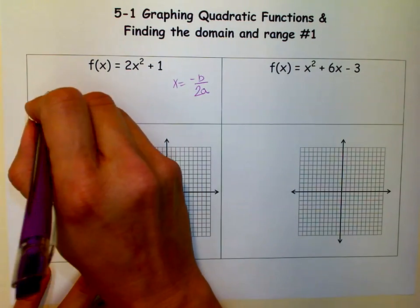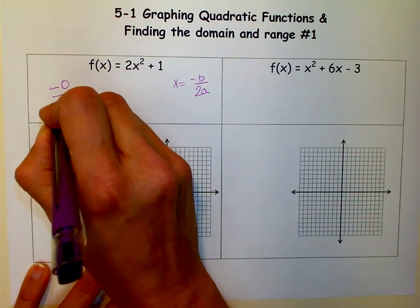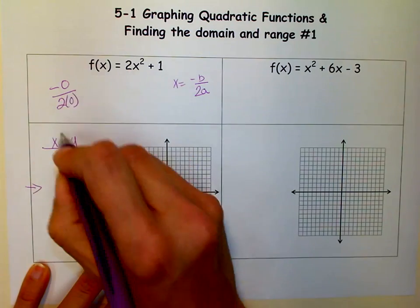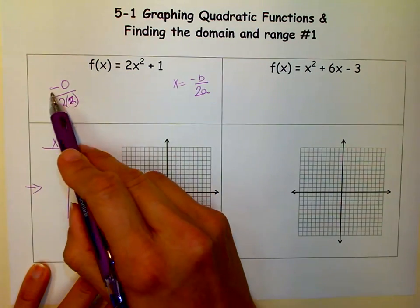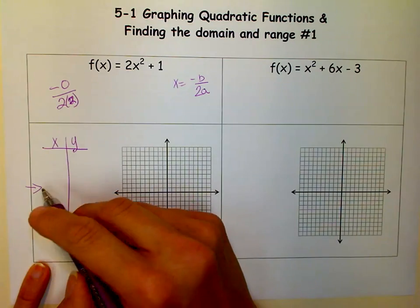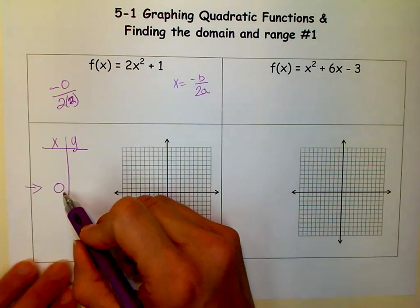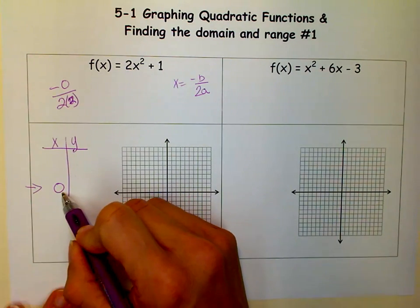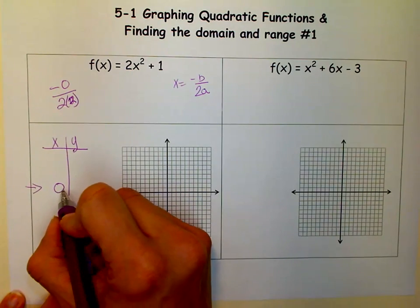So, negative b over 2a. 0 divided by 4 is 0. So now I know that I start with x in the middle, and that's how I figure out what my middle point is.